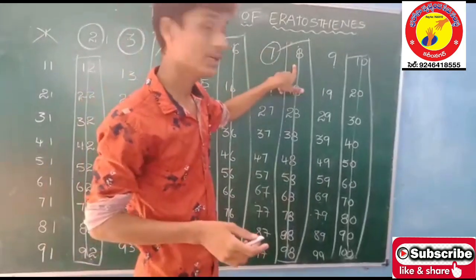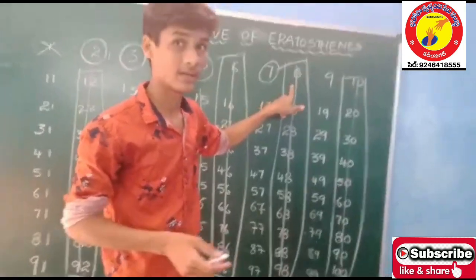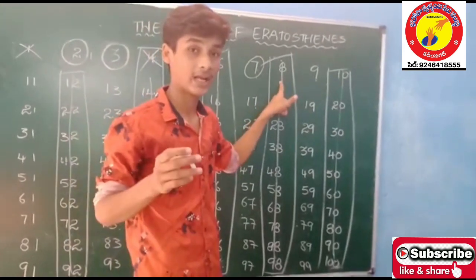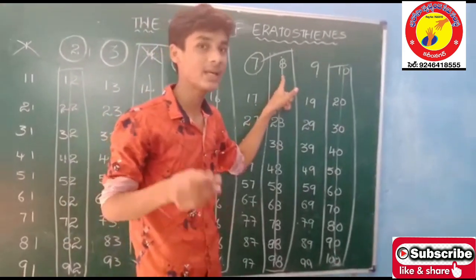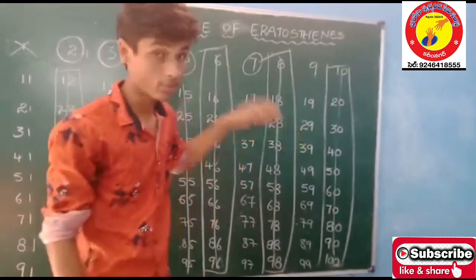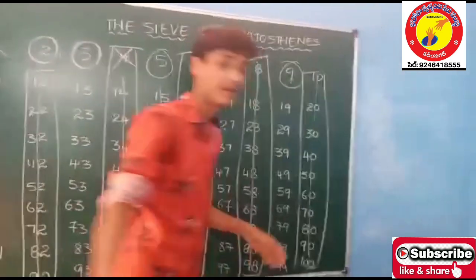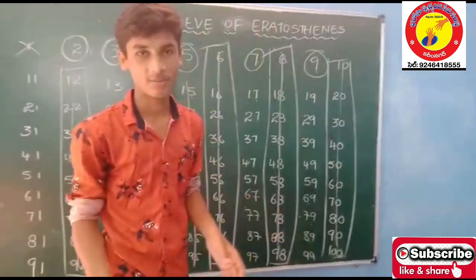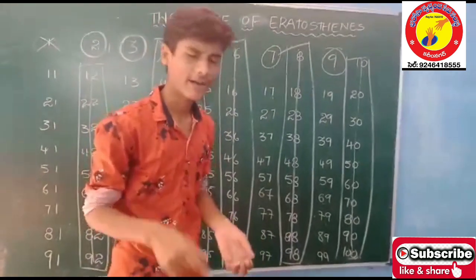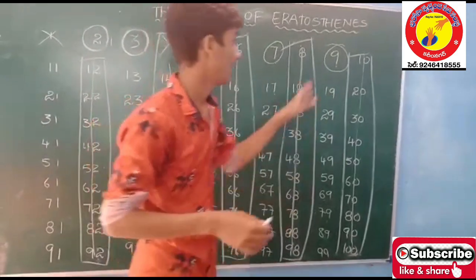Now we shall go to the number 8. 8 is not a prime number — it is a composite number because it is a multiple of 2. And here is 9. 9 is a prime number because it is having only itself and 1 as its factor. So it is a prime number.